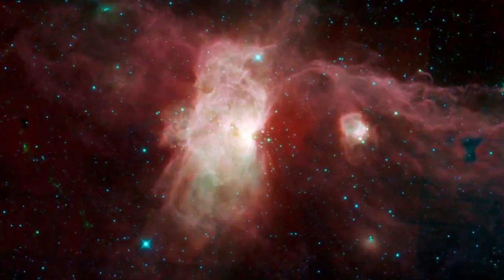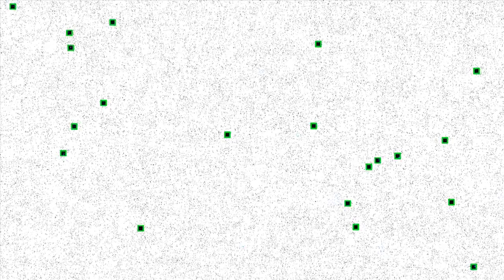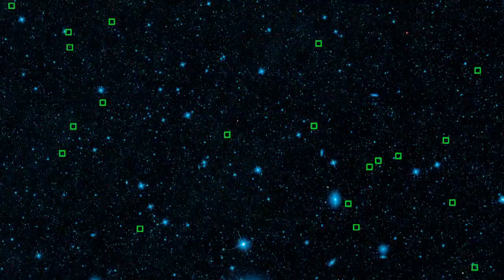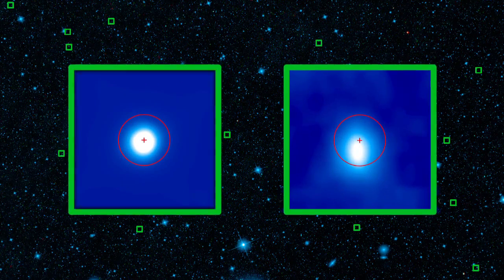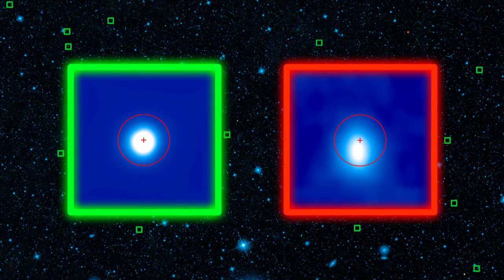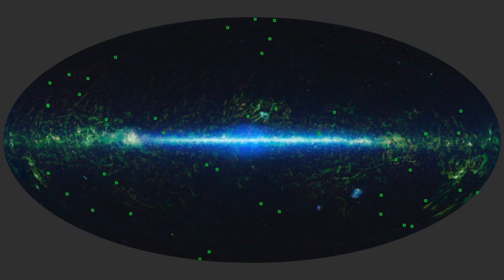The WISE mission imaged about half a billion objects all over the sky. Only a few of these sources might actually be stars with disks, but we can't find them with computer software because the clues are too subtle. The human eye can sort things out, but it would take years for astronomers to visually evaluate all the possible sources.